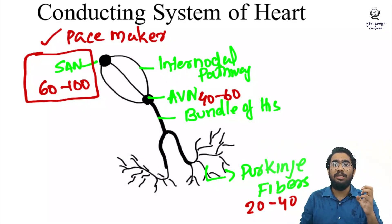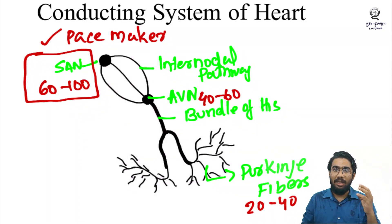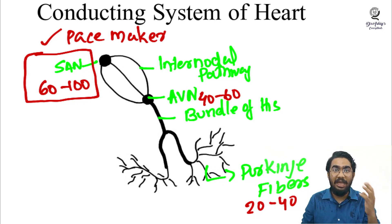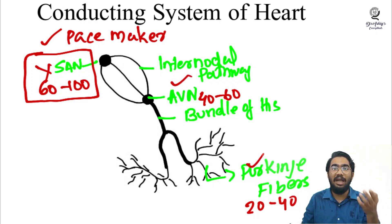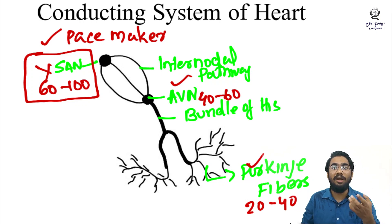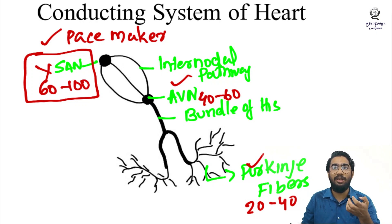In some people, the sinoatrial node may develop disease and become unable to produce signals at the normal rate of 60 to 100 per minute. In that case, other parts of the conducting system — such as the AV node or the Purkinje fibers — take up the role of pacemaker, causing the heart to beat at a much lower rate of 40 to 60 or even 20 to 40 per minute.